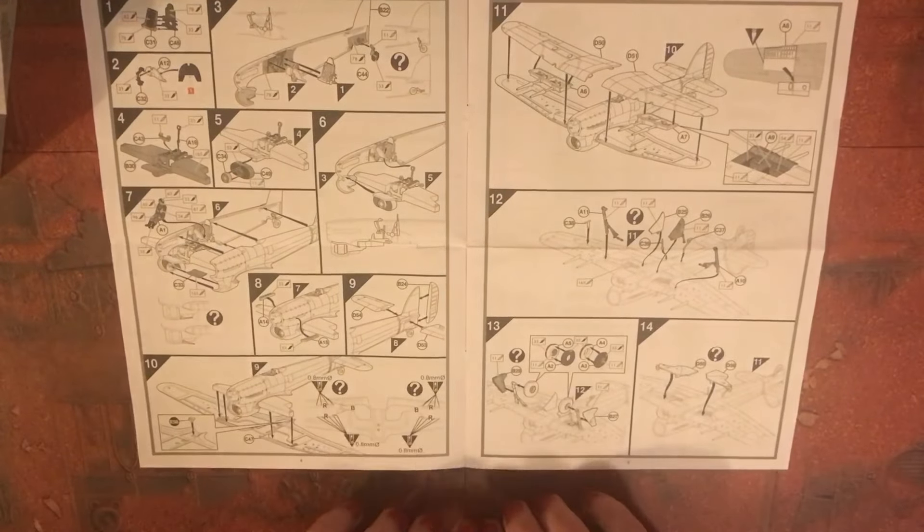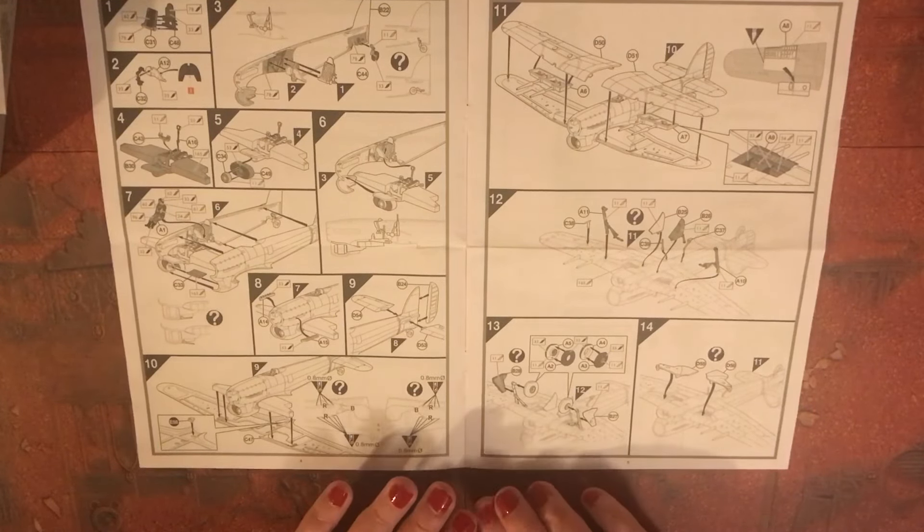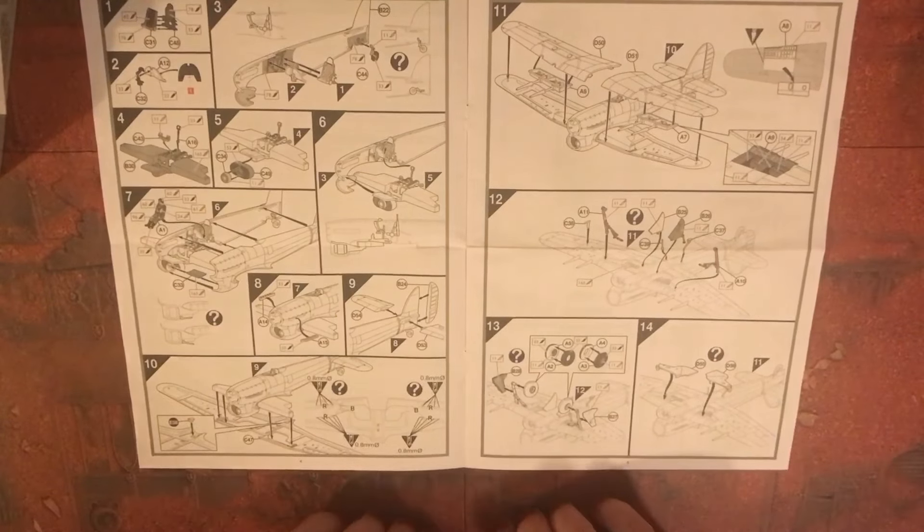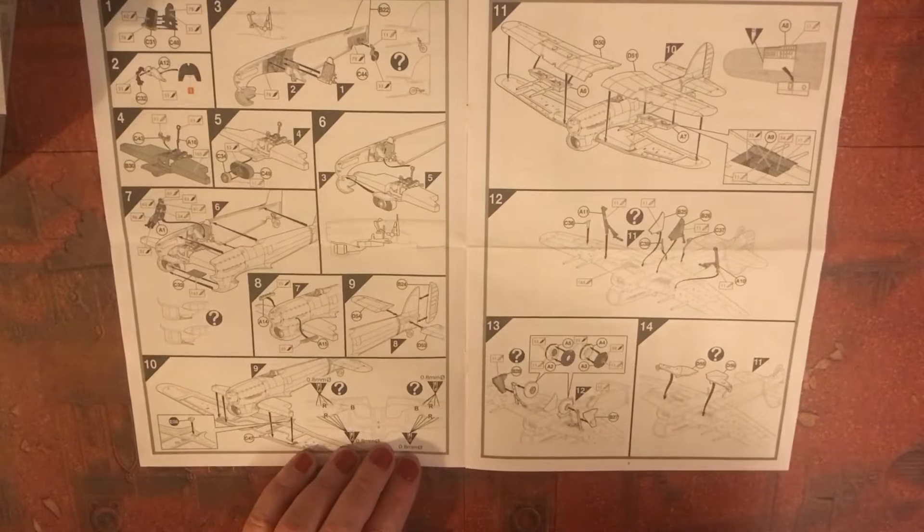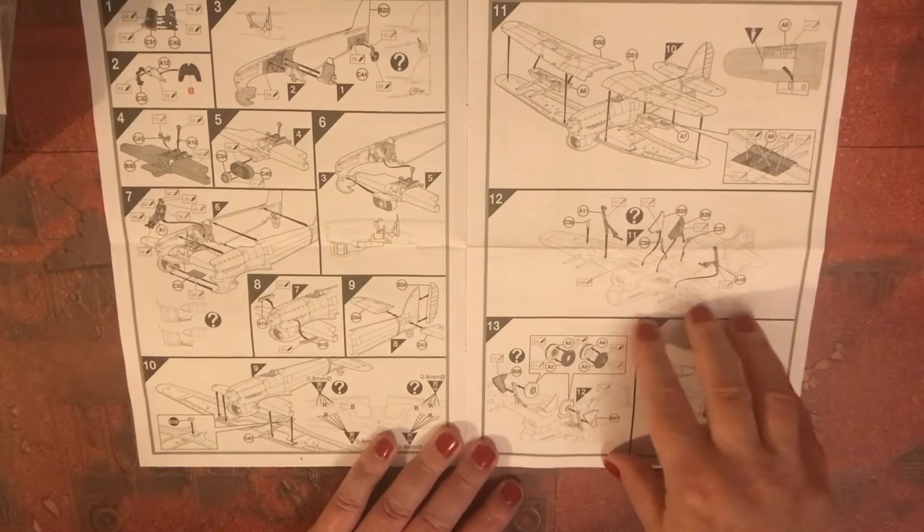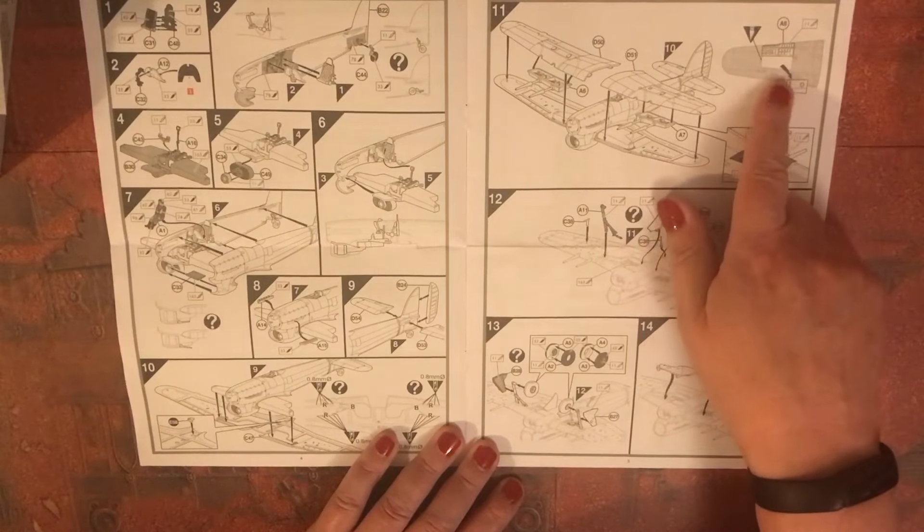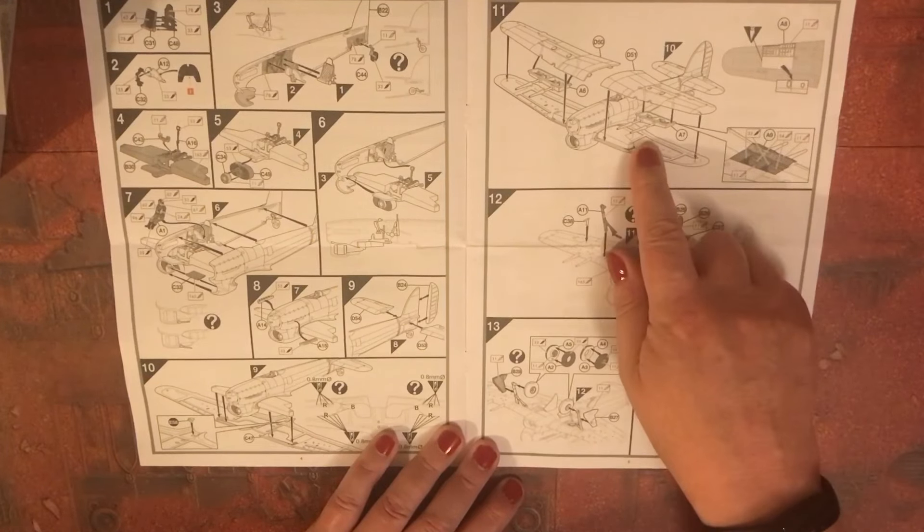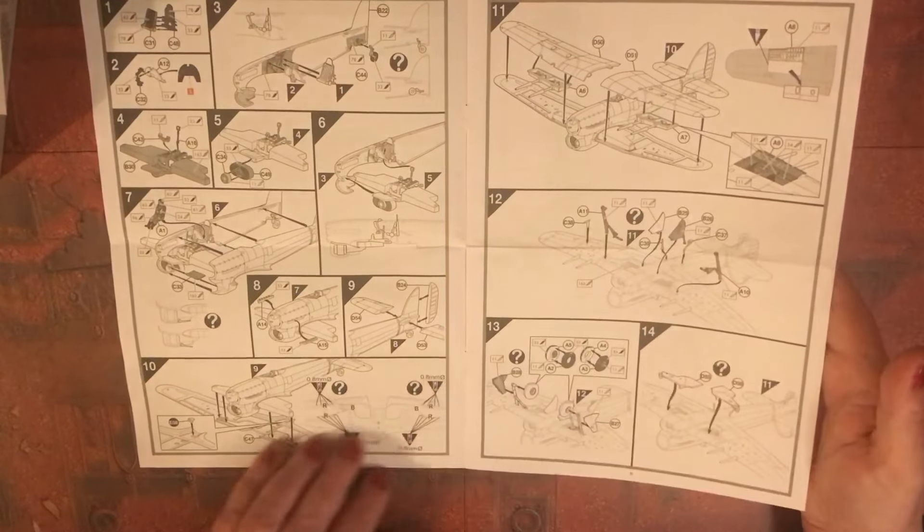According to instructions we're gonna make the Typhoon first. The Typhoon looks like a really nice kit. The cockpit looks really well detailed for a 1/72 scale kit. I do apologize for my voice, I have got a stinky cold. And there's even if you have it in a wheels down configuration on the tarmac, there are other options.